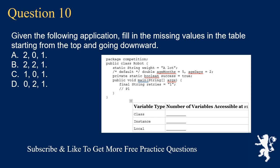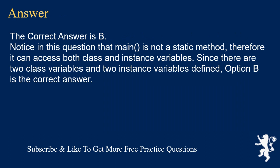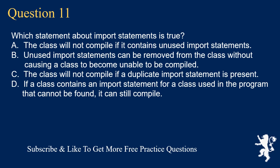Question 10: Given the following application, fill in the missing values in the table starting from the top and going downward. The correct answer is B. Notice that main is not a static method, therefore it can access both class and instance variables. Since there are two class variables and two instance variables defined, option B is the correct answer.